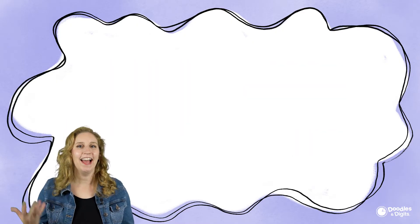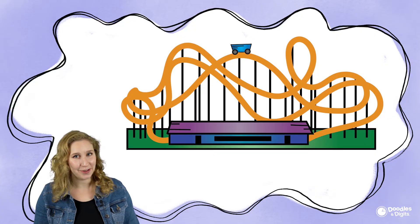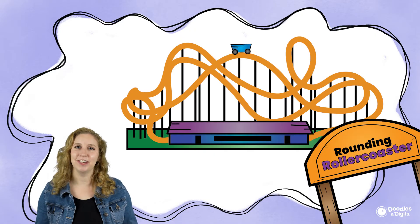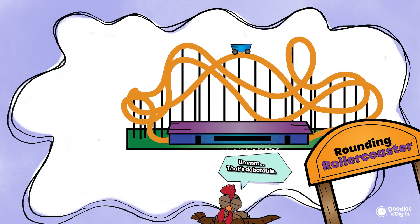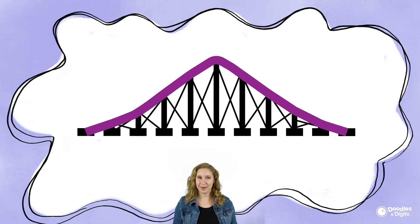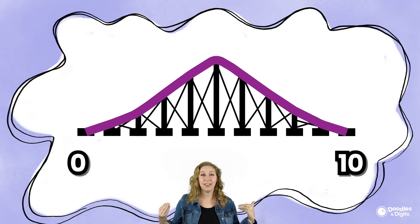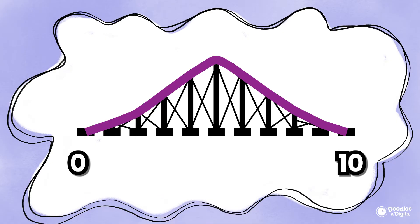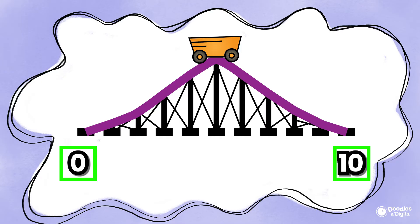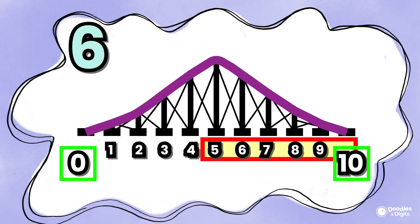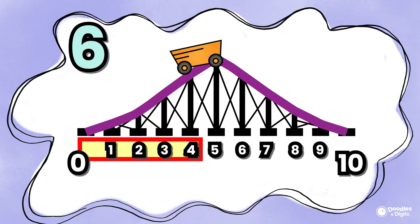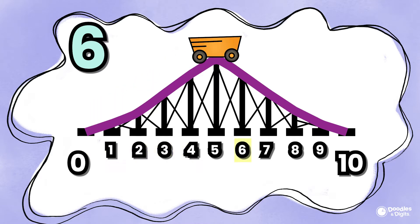When we're rounding, I always like to think of a roller coaster. Yes, a roller coaster. You have one number on this side and another number on this side, and we're going to determine if this number is closer to zero or closer to 10. Five and up, you round up. Four and down, you round down. So the six is going to round up to the number 10.